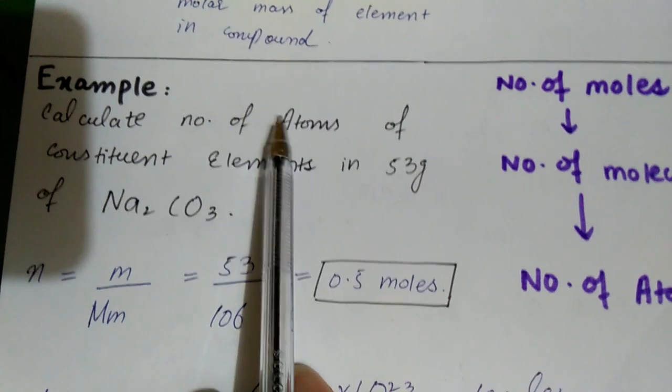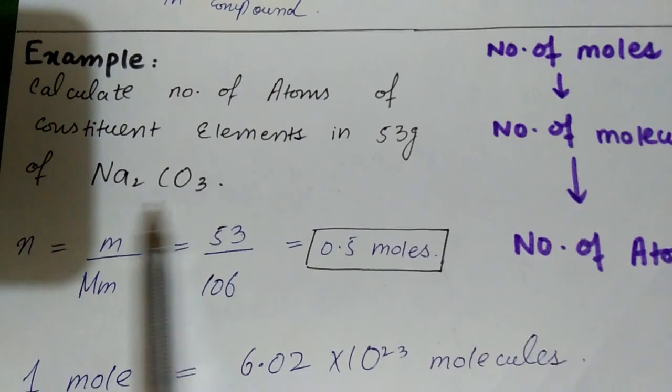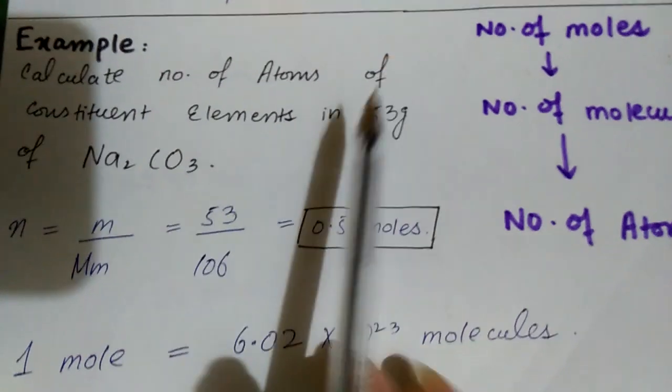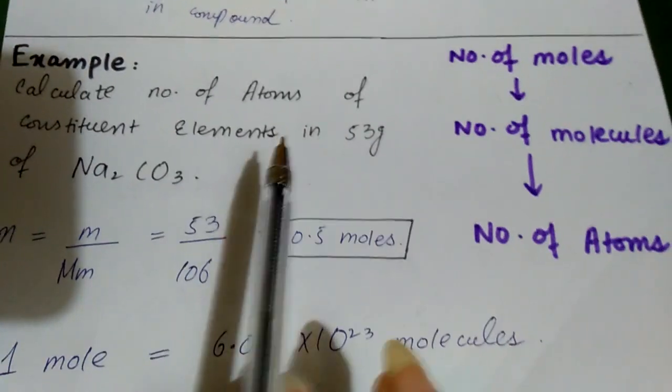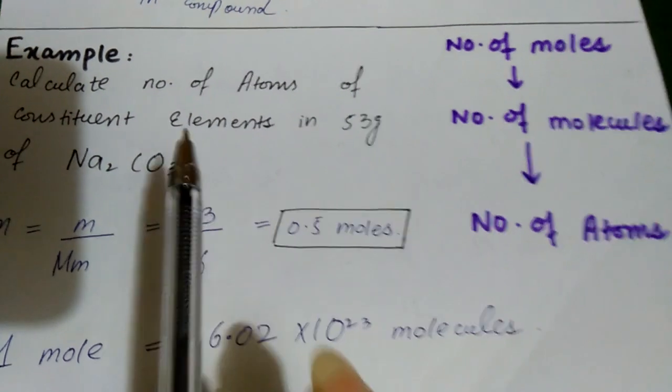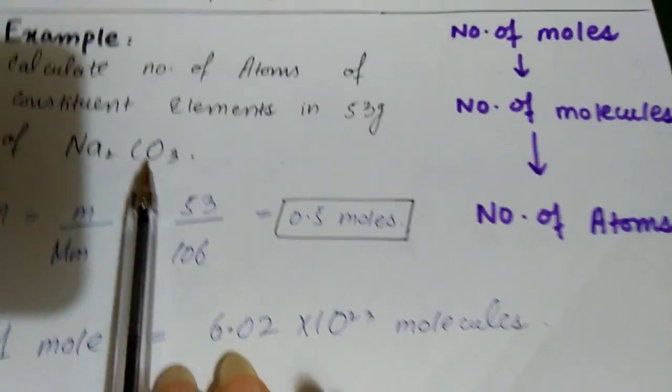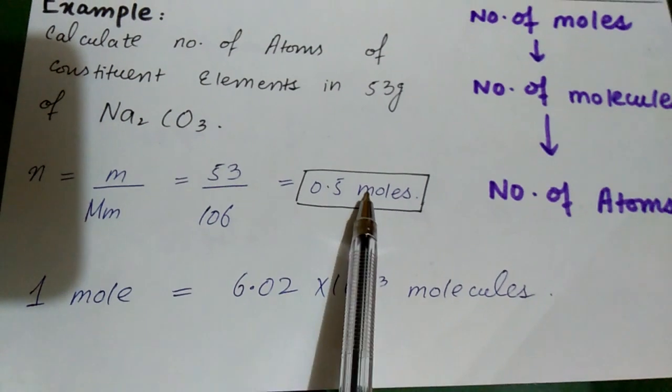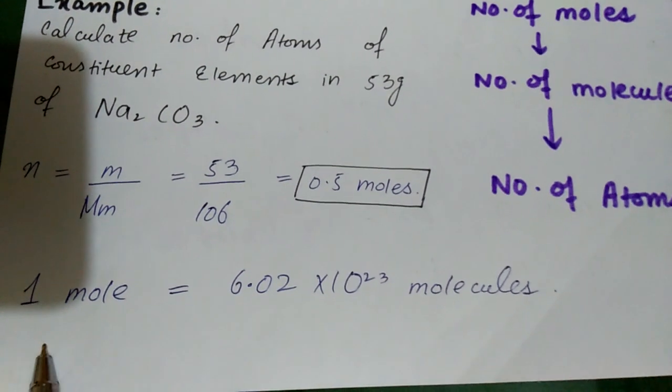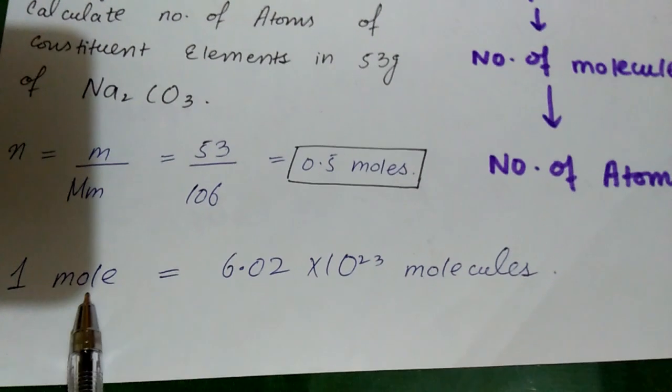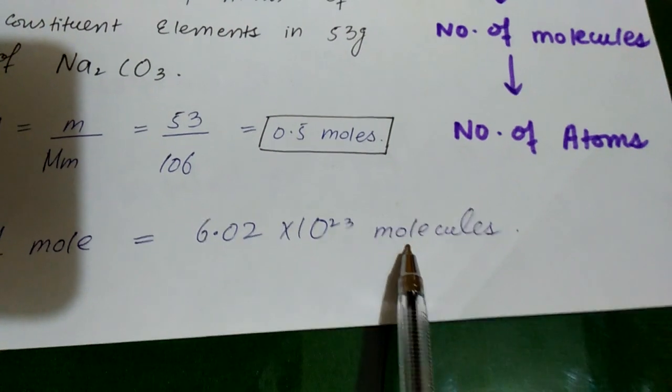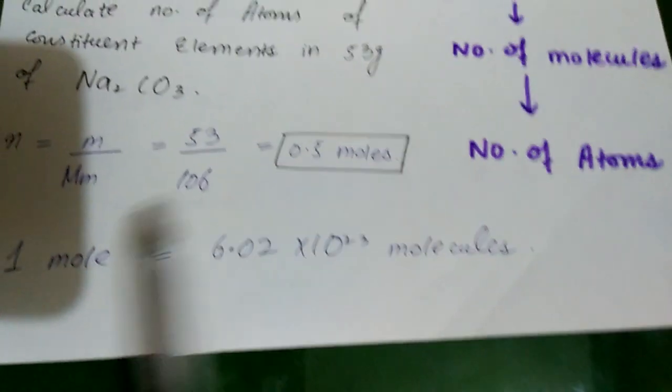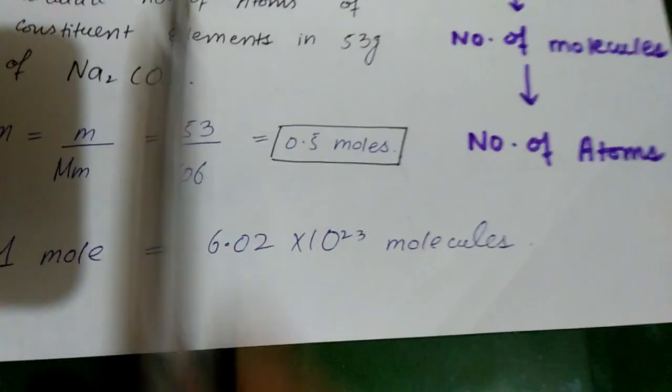We have to find the number of atoms in Na2CO3 which has given us 53 grams. So here we have talked about the number of moles. If they have given us the number of moles then okay. What do we need to find out the number of moles? We use n equals m by Mm, which gives us 53 by 106 equals 0.5 moles.